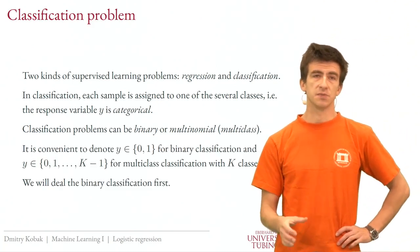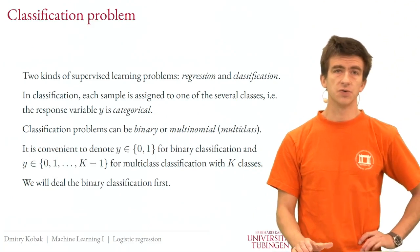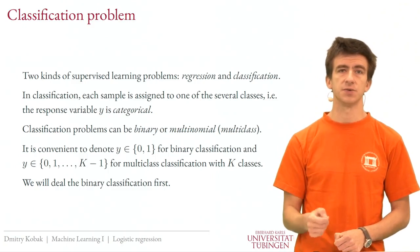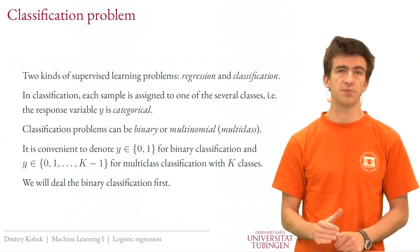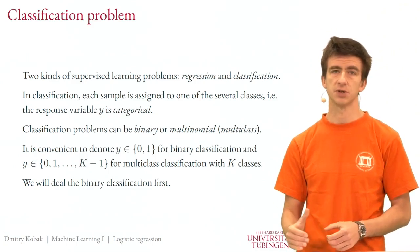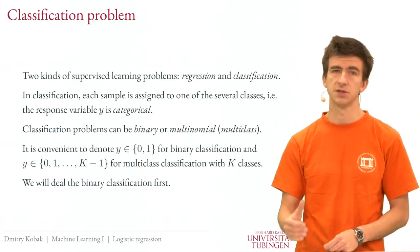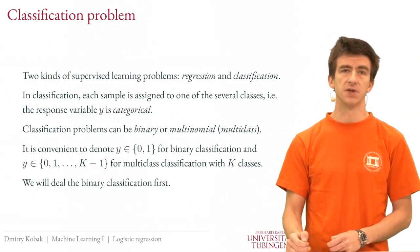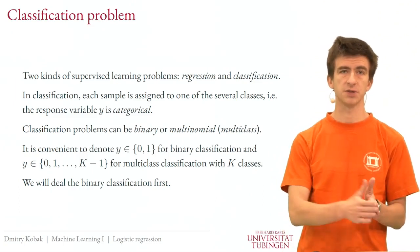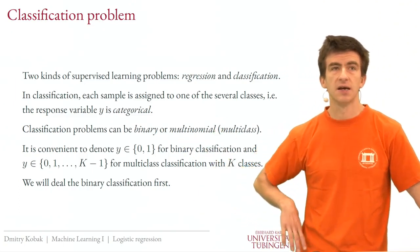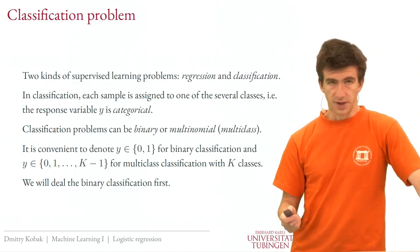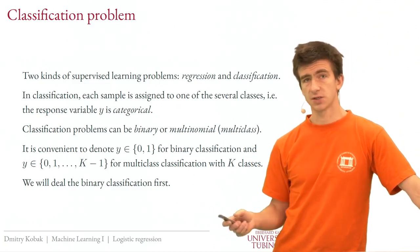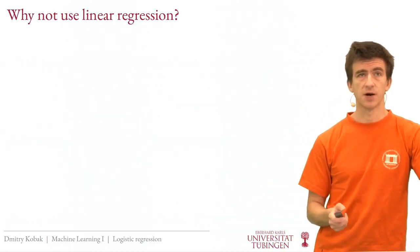It is mathematically convenient to label each of the categories with an integer starting from zero. For a binary classification problem, we talk about the response variable Y taking values in {0, 1}. If there are more than two classes, it will be from 0 to K minus 1, where K is the number of classes. We'll start and spend most of the lecture talking about binary classification problems, so I will just be talking about zeros and ones from now on.